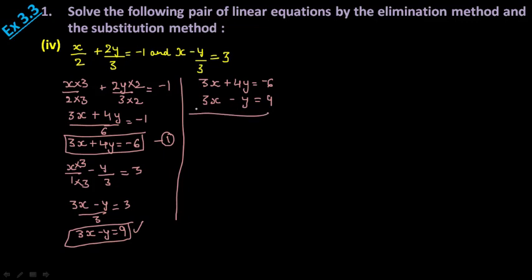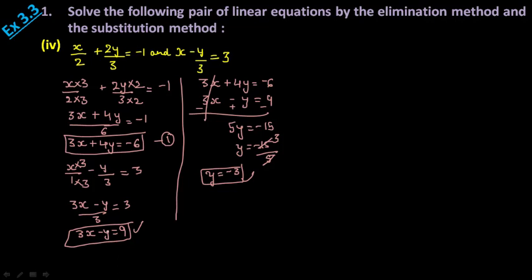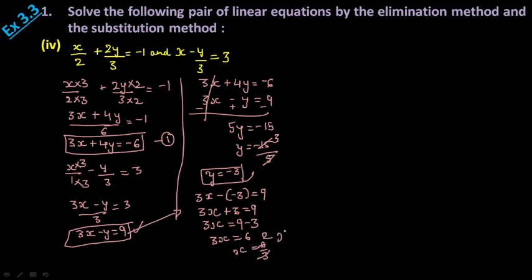Subtracting equation 2 from equation 1: the 3x terms cancel, leaving 4y - (-y) = 5y, and -6 - 9 = -15. So 5y = -15, giving y = -3. Now keep y = -3 in the second equation: 3x - (-3) = 9, so 3x + 3 = 9. Take 3 to the other side: 3x = 6, so x = 2. This is the result by the elimination method.